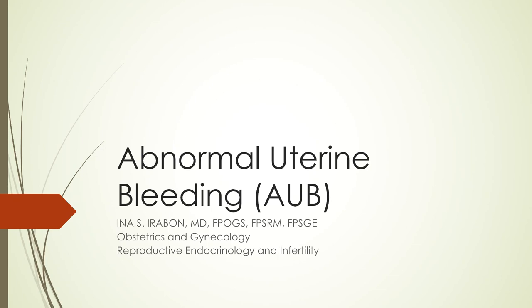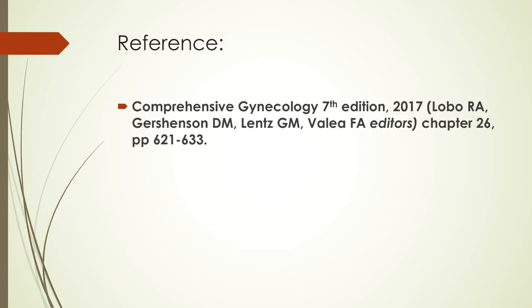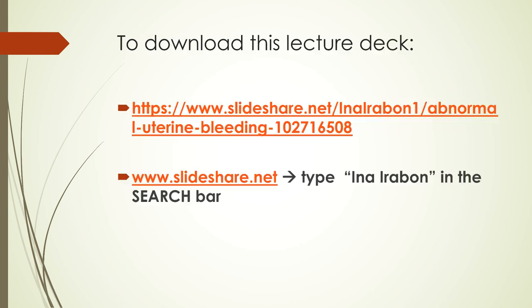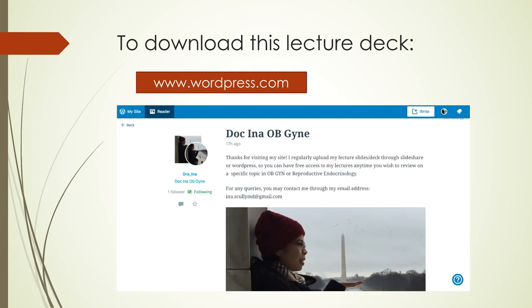Good day everyone, this is Doc Ina. The topic for this lecture is Abnormal Uterine Bleeding, or AUB. The main reference for this lecture is Comprehensive Gynecology, 7th Edition, Chapter 26, Abnormal Uterine Bleeding. To download this lecture deck for free, you can either go to slideshare.net or my WordPress site.